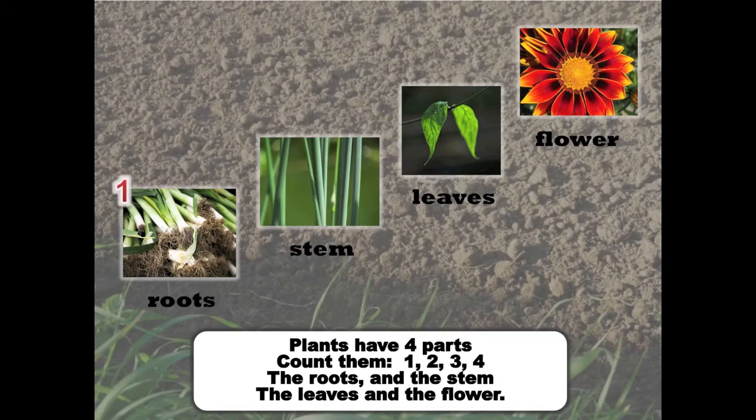Plants have four parts. Count them. One, two, three, four. The roots and the stem. The leaves and the flower.